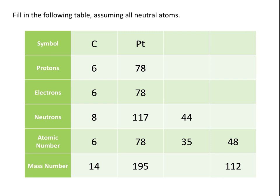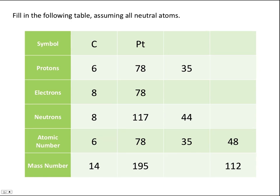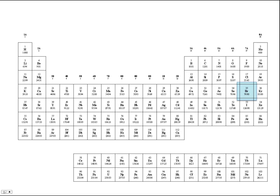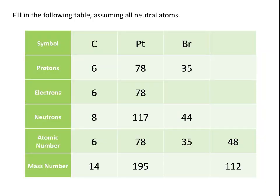Moving to the next column: if the atomic number is equal to 35, we also know that this atom has 35 protons. Looking up atomic number 35 on the periodic table, we see that this element is bromine, with the symbol Br. Because we are assuming all neutral atoms, bromine must also have 35 electrons. The mass number equals the number of neutrons plus the number of protons, so 44 plus 35, which gives us a mass number of 79.